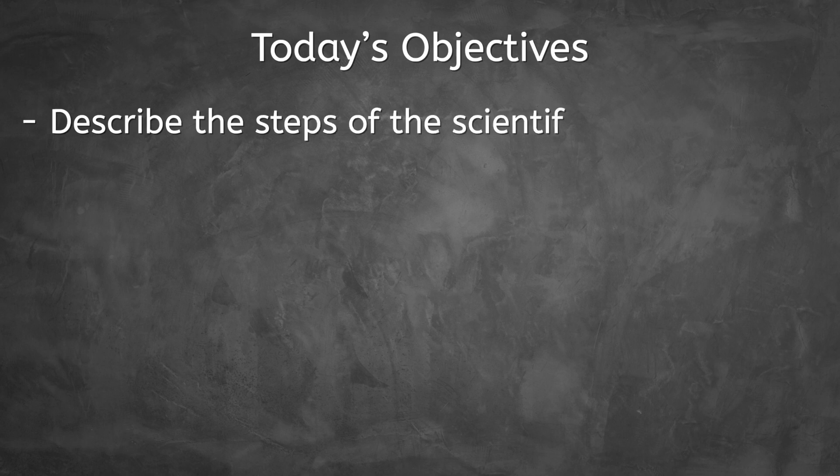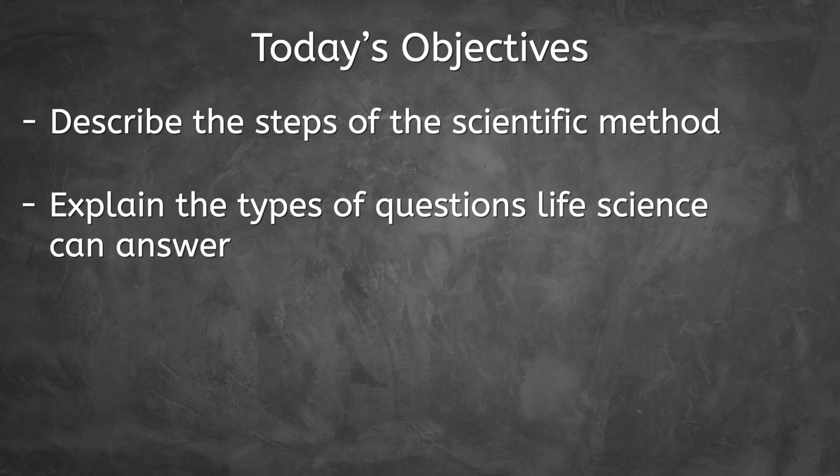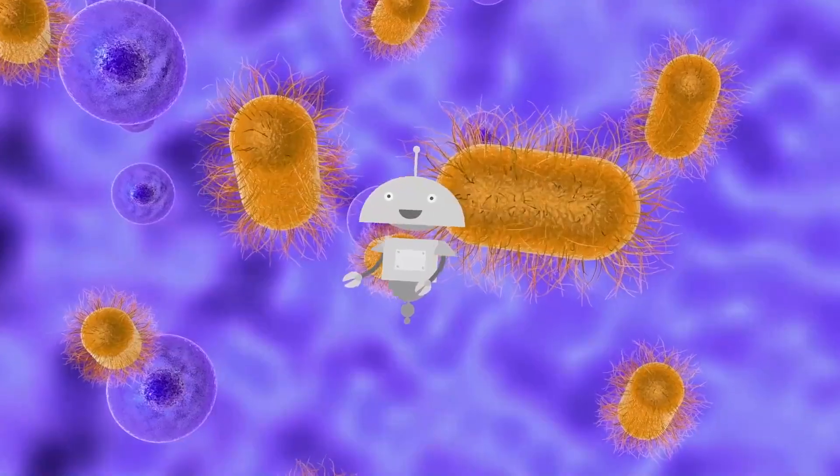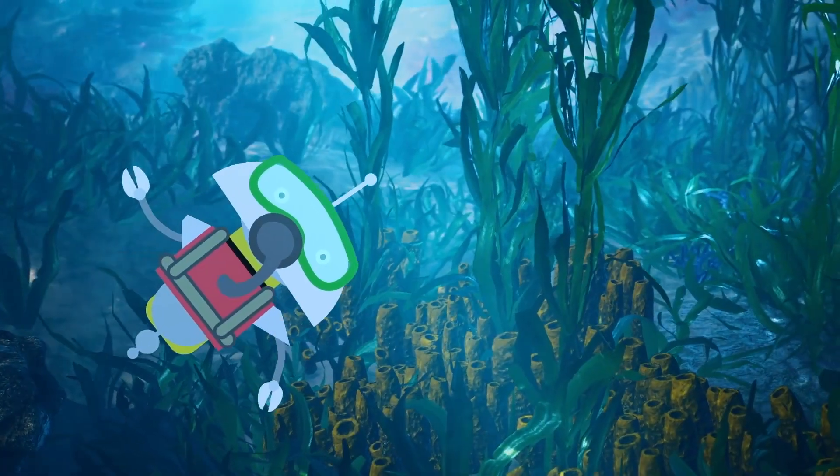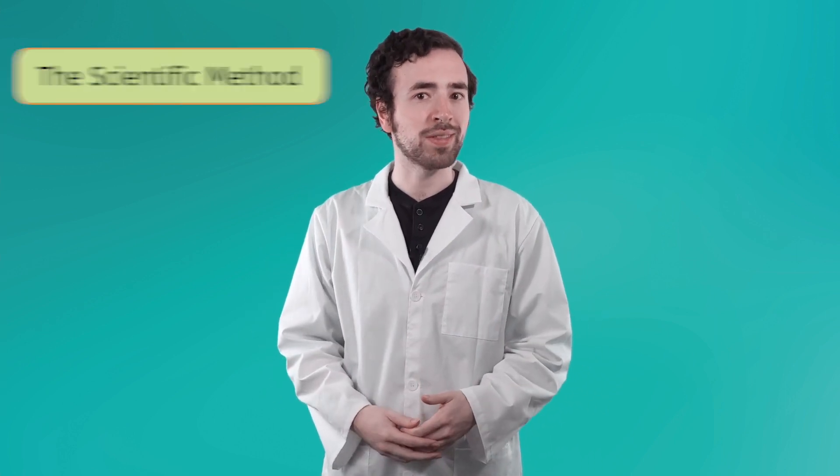In this lesson, we're going to focus on this topic as we describe the steps of the scientific method and explain the types of questions that life science can answer. Let's get into it! Scientists are naturally curious people who observe the world around them, ask questions, and investigate problems. Of course, there's no one-size-fits-all way to accomplish all of these things, but scientists do have a guide to help them that you've probably heard of before. The scientific method.